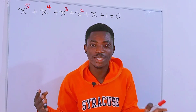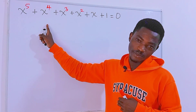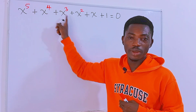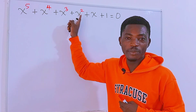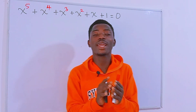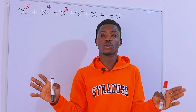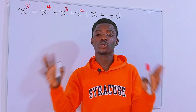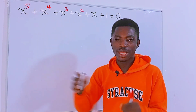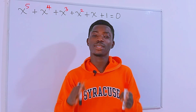Hello guys and welcome. Today we have this interesting question: x to the 5th power plus x to the 4th power plus x to the 3rd plus x to the 2nd plus x plus 1 is equal to 0. We have to find all solutions to the problem — not only real solutions. Because the highest power is 5, we are supposed to get 5 different solutions.